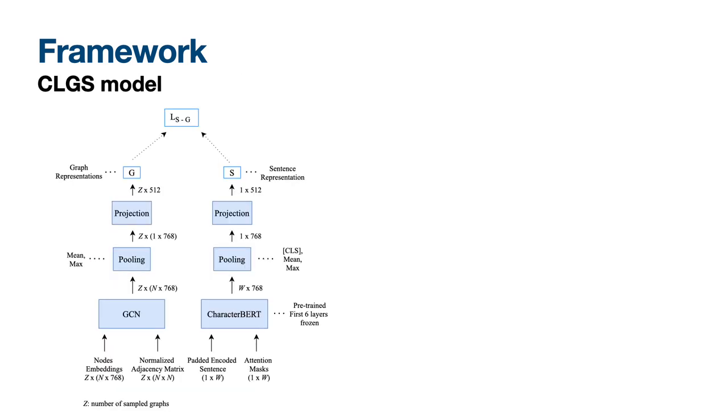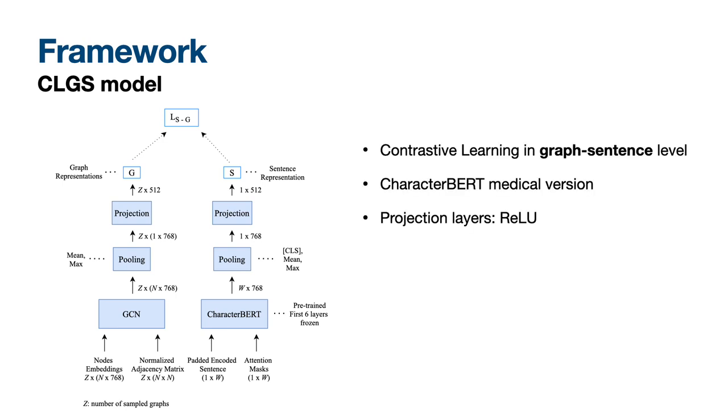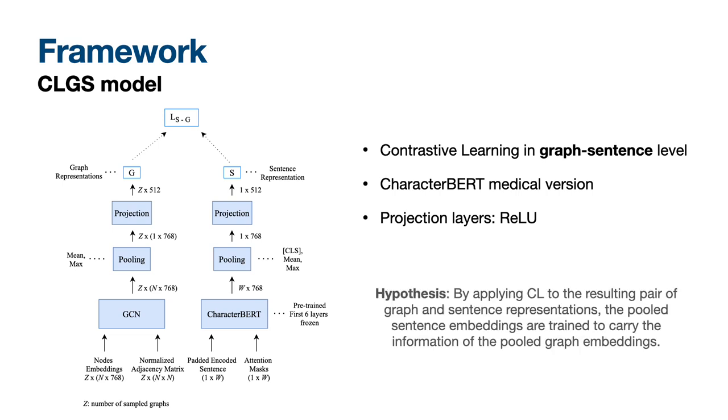In the CLGS model, we pass the sentence through the CharacterBERT model, and then we have a pooling and projection layer to extract our final sentence representation. We experiment with different pooling strategies, like average and max pooling, as we want to apply contrastive learning on the other side. We pass the positive and sampled negative graphs through the graph layer, and we extract the graph representations. Finally, we apply contrastive learning in the graph-sentence level, and we hypothesize that by applying contrastive learning to the resulting pair of graph and sentence representations, the pooled sentence embeddings are trained to carry the information of the pooled graph embeddings.